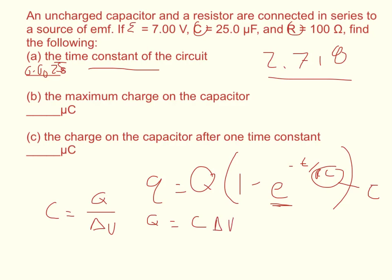The maximum charge is equal to the capacitance times the potential difference. You would just take the capacitance, 25 microfarads times E times 7. Since your answer is in microcoulombs, you don't have to convert out of microfarads. You just take 25 times 7, and you should get 175 microcoulombs.